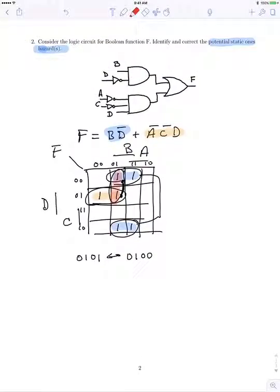That would be your product term of ĀBC̄. So putting that additional hardware, ĀBC̄, would eliminate the single bit static one hazard.